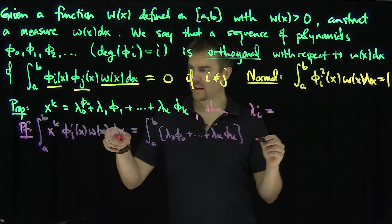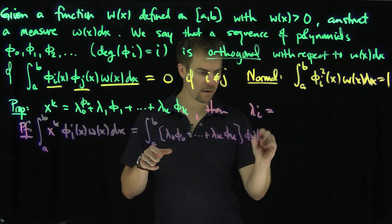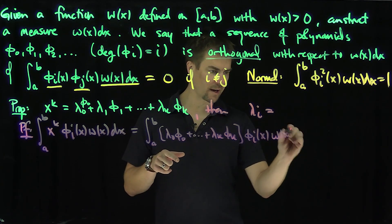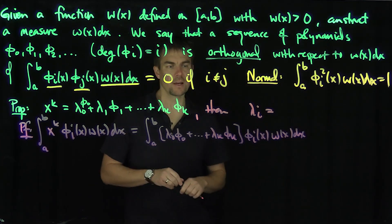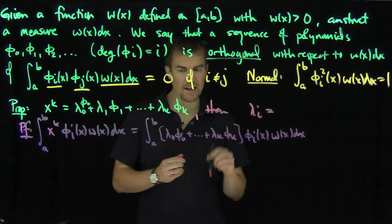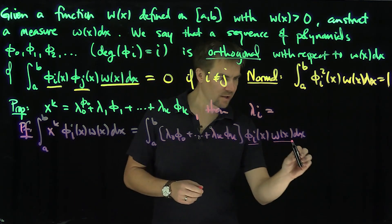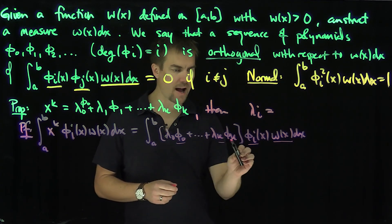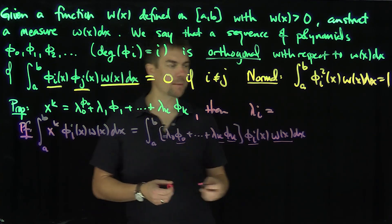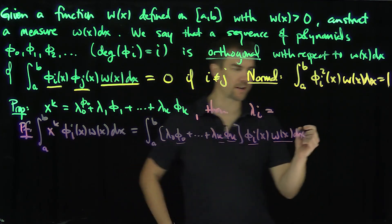And then I'm going to hit that with φᵢ(x)w(x)dx. And now notice that whenever I take any φᵢ, the integral of φᵢw(x) with anything that's not equal to φᵢ is going to give me zero, so this whole thing is going to simplify.